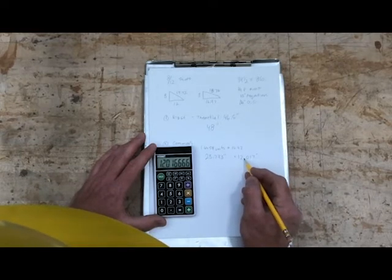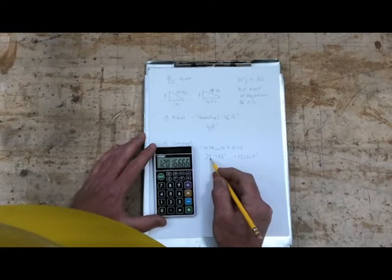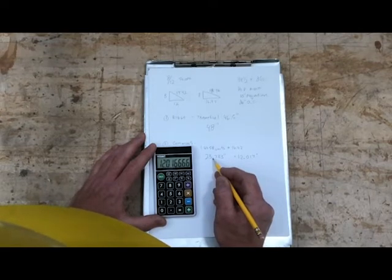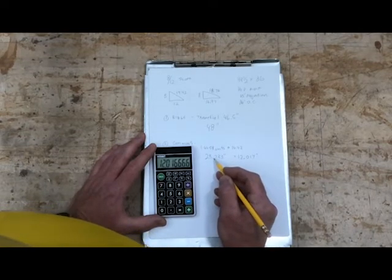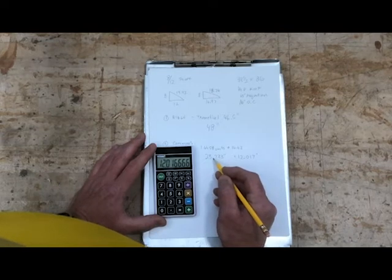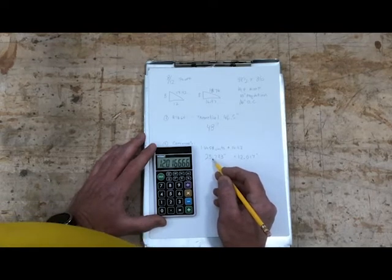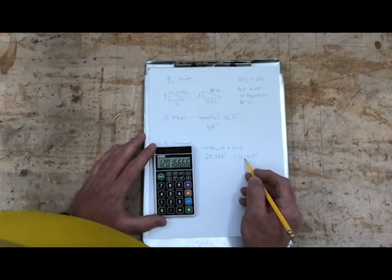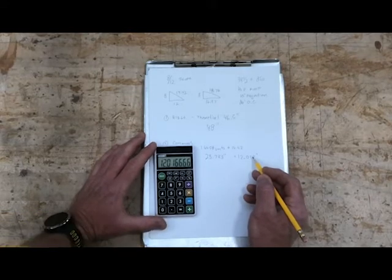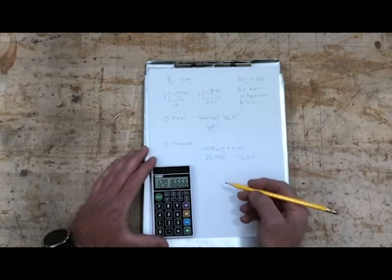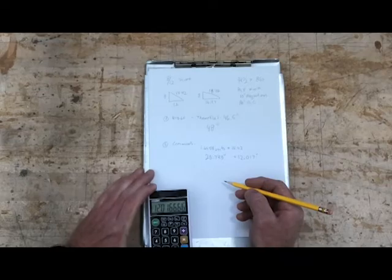I'm going to use this number differently though. I want to lay everything out from the center of the ridge to the building line. That building line is important to me. That's where my bird's mouth is going to be. And at that point, I will add my 12.017 inches to it when I actually go over to the sawhorses and lay this out.